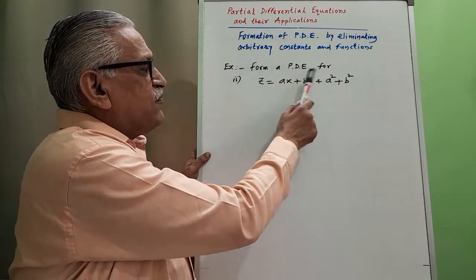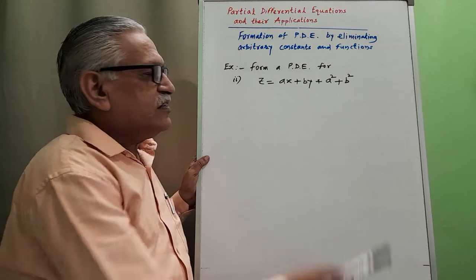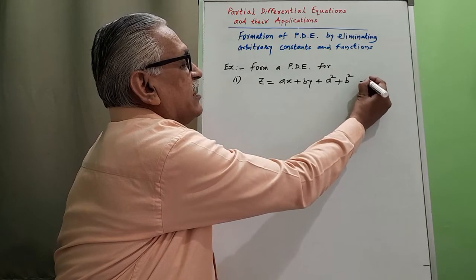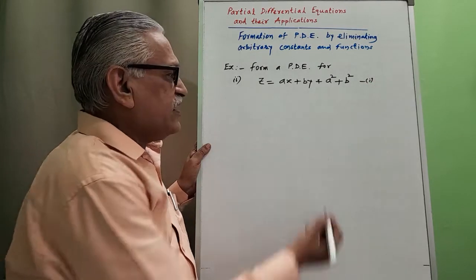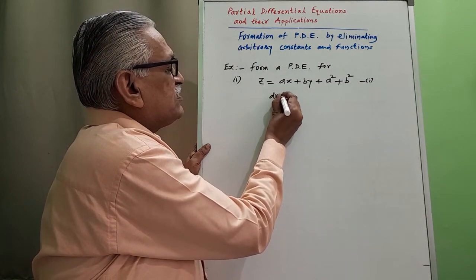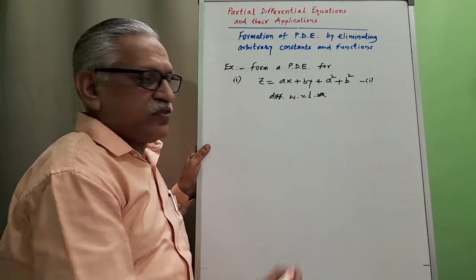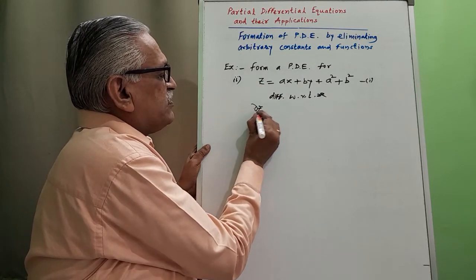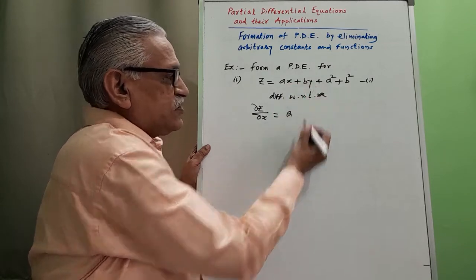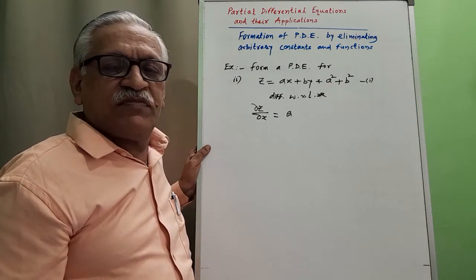Second example: form a partial differential equation for z equals ax plus by plus a² plus b². We call this equation 1. As it is a function of two independent variables x and y, differentiating first with respect to x, keeping y constant, we get dou z by dou x equals a, since the by term and the constants a² and b² give zero derivatives. So p equals a.